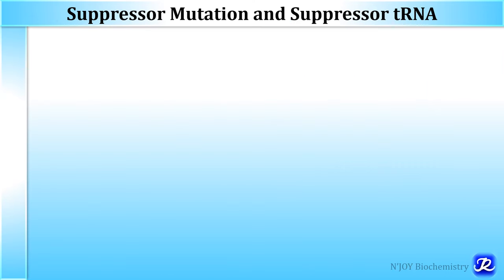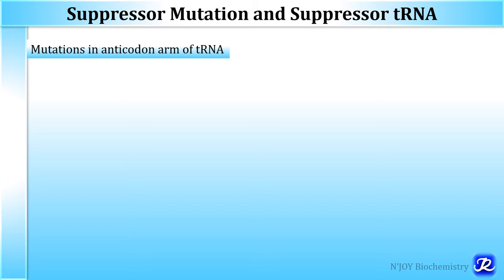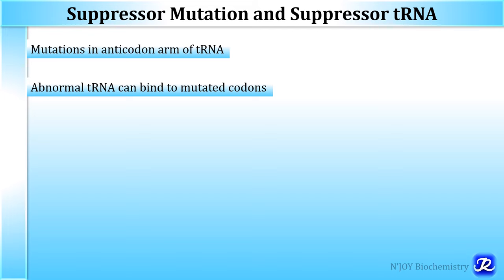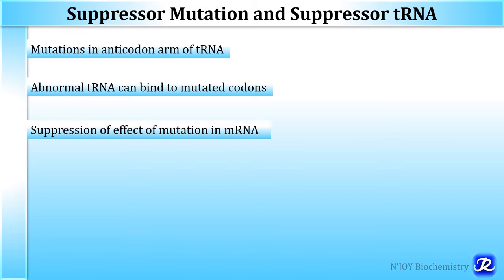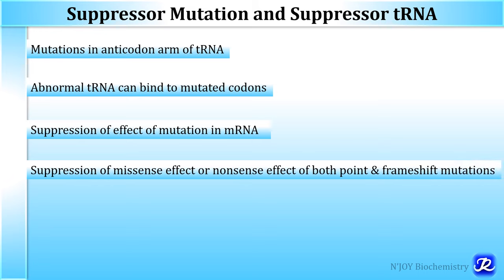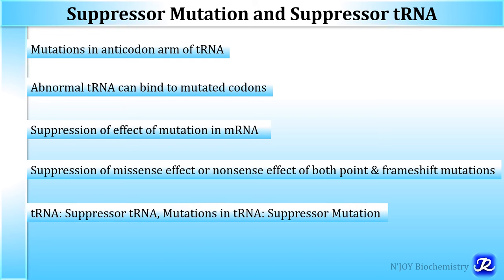What is suppressor mutation and suppressor transfer RNA? If the transfer RNA is abnormal — if there is a mutation in the anticodon arm of tRNA — this abnormal tRNA can bind to mutated codons and leads to suppression of the missense or nonsense effect of both point and frameshift mutations. Such tRNA is called suppressor tRNA and such mutations in tRNA are called suppressor mutations.